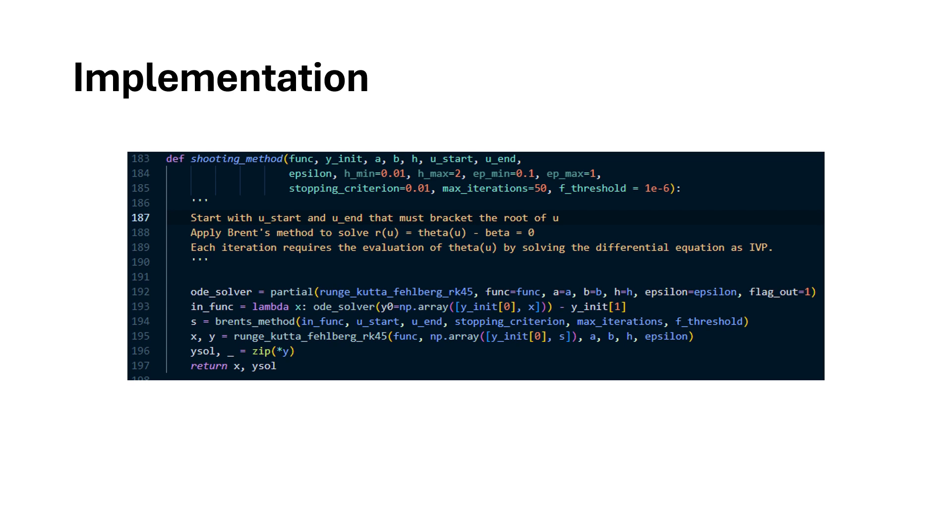We can write the shooting method in Python as follows. The ODE solver for the initial value problem is Runge-Kutta-Fehlberg method which is also known as RK45 method. We then write the input function which compares the solution at the boundary point and the given boundary condition.